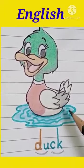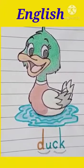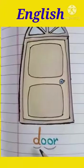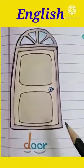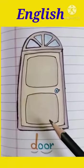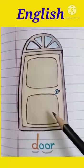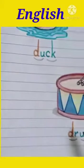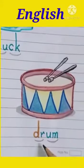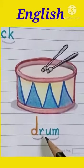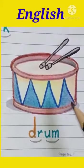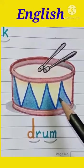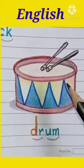The duck is in the water. Door. D-O-O-R. Door. Door means Darwaja. It is a door. Drum. D for drum. D-R-U-M. Drum. Drum is a musical instrument.